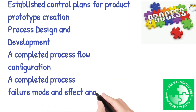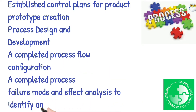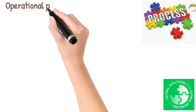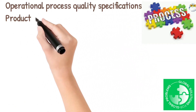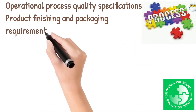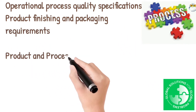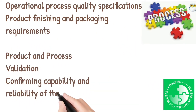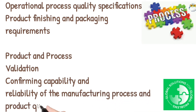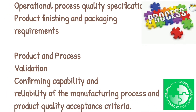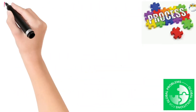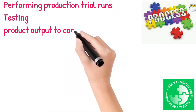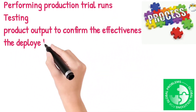Phase 3 - Process Design and Development: A Completed Process Flow Configuration, a Completed Process Failure Mode and Effect Analysis to identify and deal with risks, Operational Process Quality Specifications, and Product Finishing and Packaging Requirements. Phase 4 - Product and Process Validation: Confirming Capability and Reliability of the Manufacturing Process and Product Quality Acceptance Criteria, and Performing Production Trial runs testing product output to confirm the effectiveness of the deployed manufacturing approach.